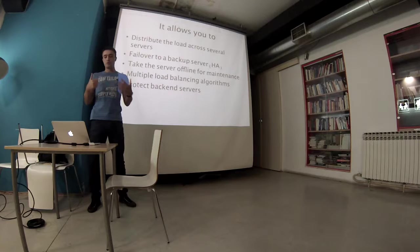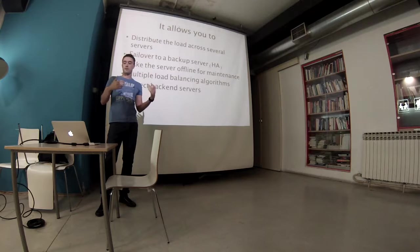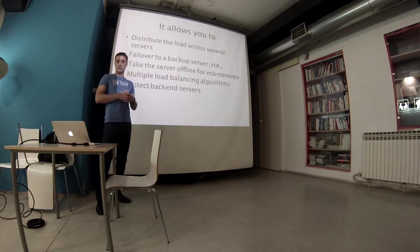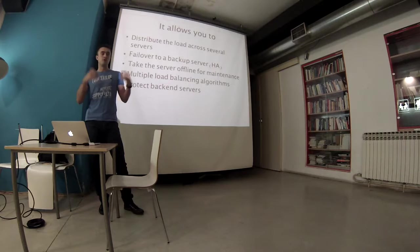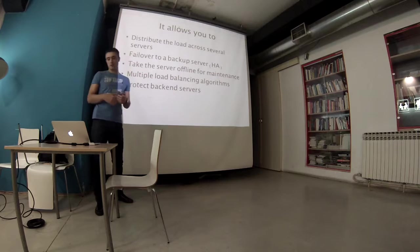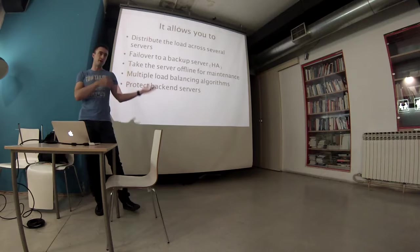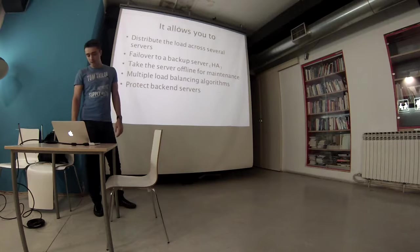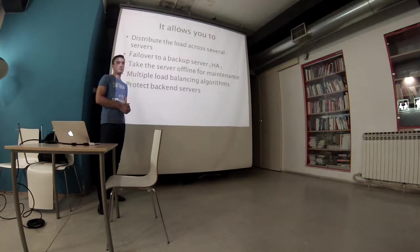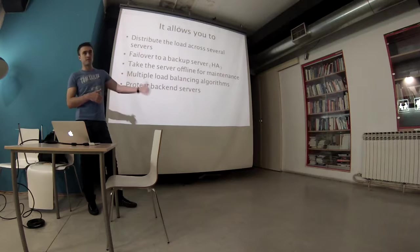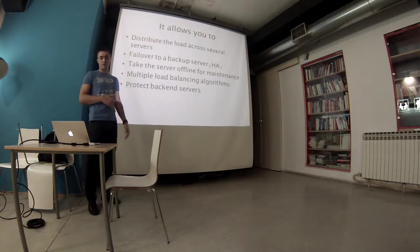So what does HAProxy actually do? HAProxy allows you to distribute the load across several servers, do a failover to backup server if one of your application servers is down or unavailable or you're doing maintenance. It allows you to take the server offline for maintenance. It can distribute the load using multiple load balancing algorithms like round-robin or least connections or based on your IP address. And it also allows you to protect your back-end servers. For example, if you know that your application server can handle 30 or 40 or 50 requests per second, there is no reason to send more than that amount. You can just let them pile up on your proxy server or bounce them.